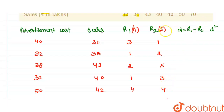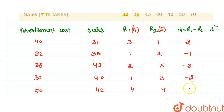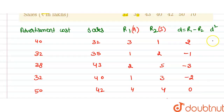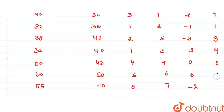So rank one minus rank two gives differences: 2, minus 1, minus 3, minus 2, 0, 0, and minus 2. Squaring these gives d square values: 4, 1, 9, 4, 0, 0, and 4.